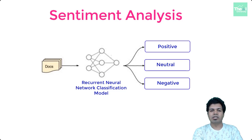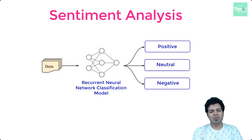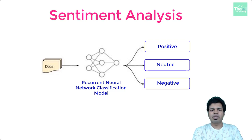Text is, in a way, sequential data — sequences of words one after another — as discussed in a previous video. RNNs are very good at learning sequential data because they understand time relationships in a better way.